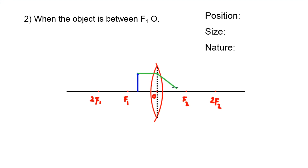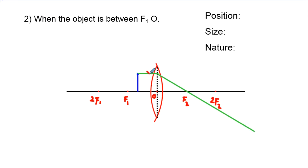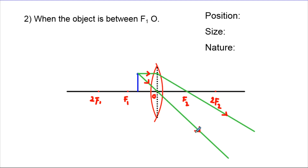After refraction, the ray passes through F2. The optical center can be used to change the direction. The sequence involving F2 and F3 describes the image formation.